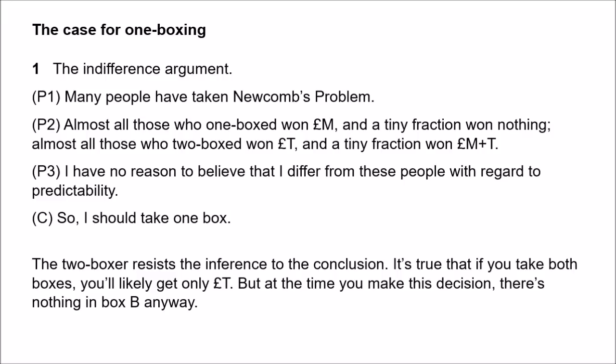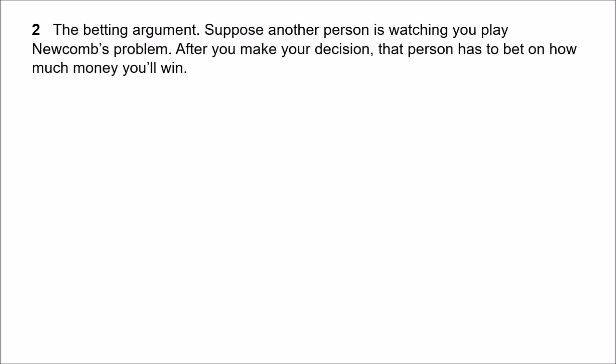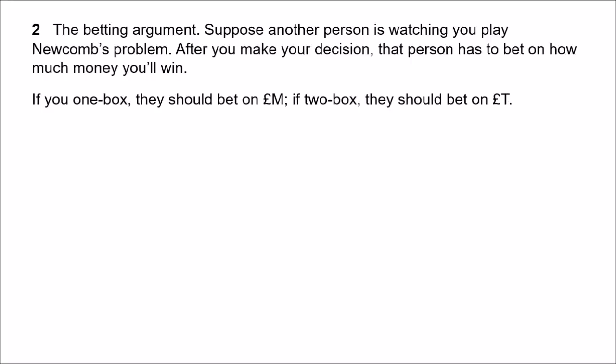A second argument for one-boxing is the betting argument. Suppose another person is watching you play Newcomb's Problem. You make your decision, but rather than open the boxes right away, the other person has to bet money on how much you will win. It's pretty obvious that if you've one-boxed, they should bet that you'd win the million, and if you've two-boxed, they should bet on a thousand. And surely this suggests that if you want the million, you should one-box. Your decision, before it's made, they wouldn't know what to bet — but the decision is an extremely good indicator of what's in the boxes.